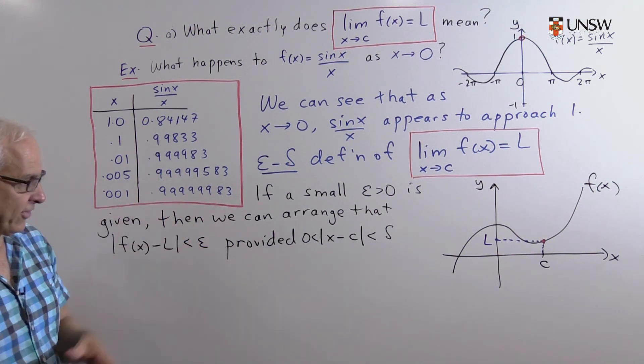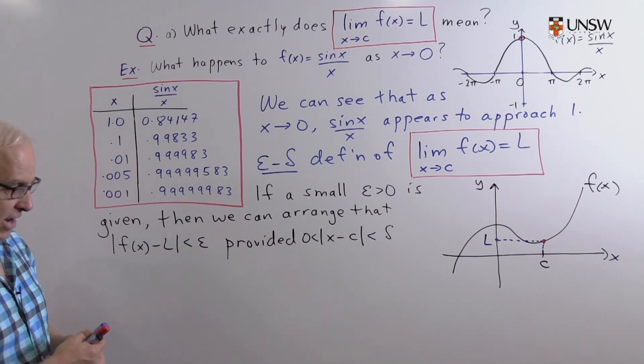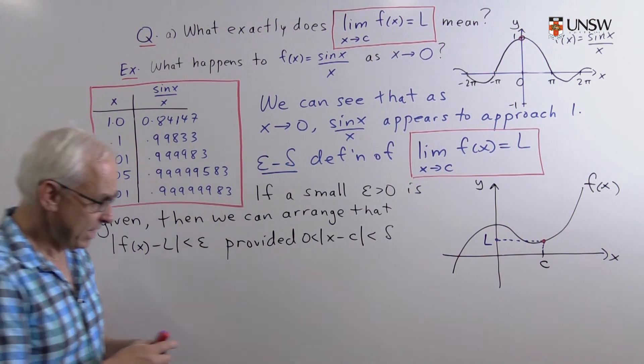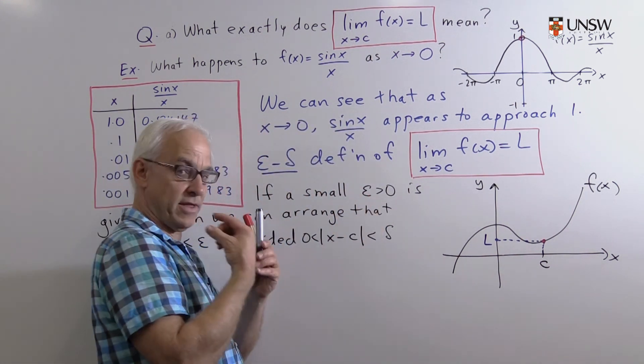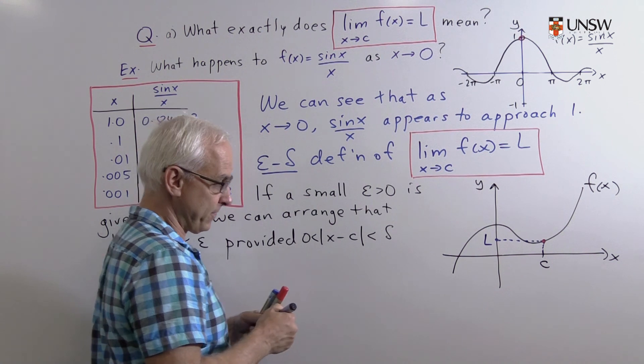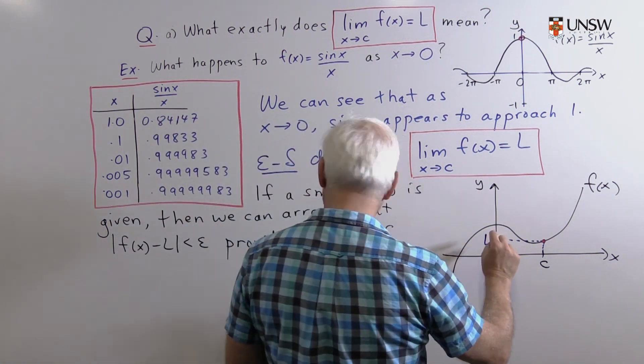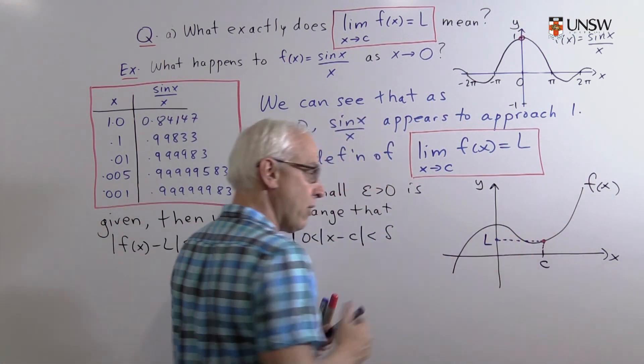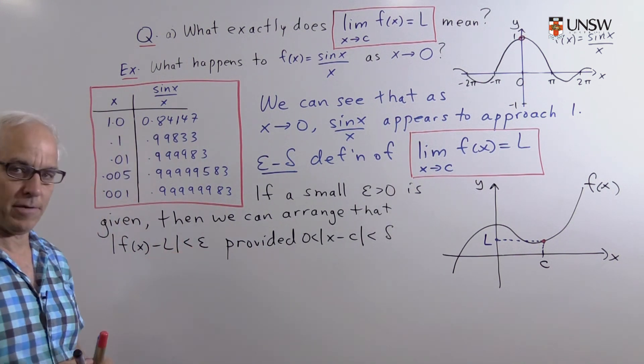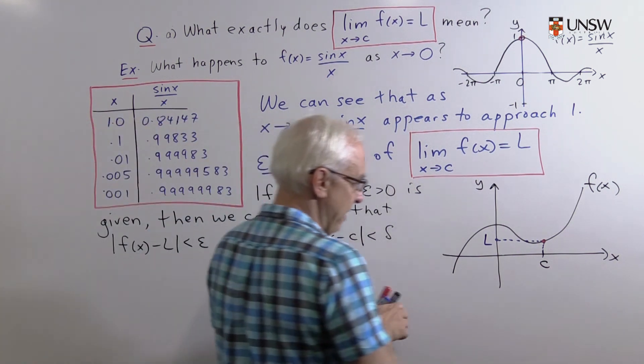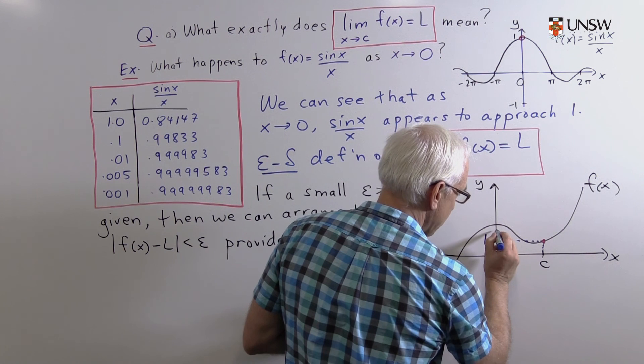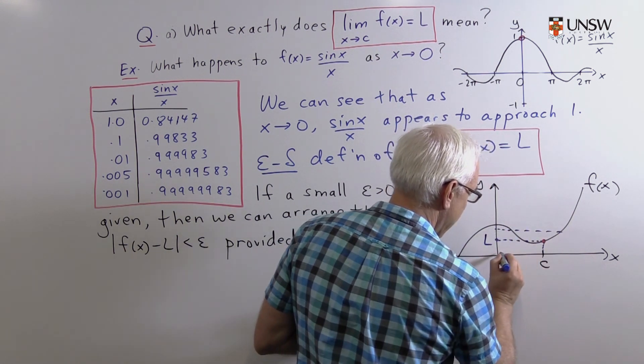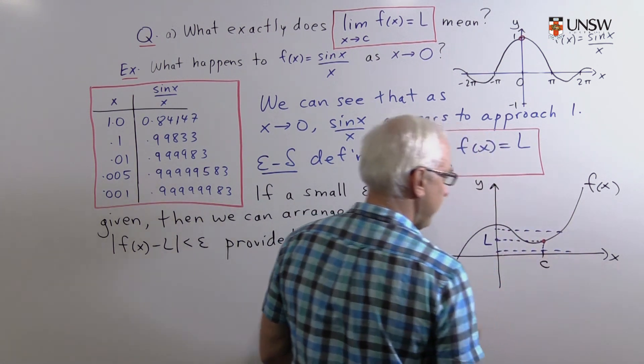Let's have a look at what this is saying. In the diagram what it means is that if we choose an epsilon greater than zero, a small number, and we're interested in the value of the function being within epsilon of L, well that suggests a band around L of width epsilon. Here's a width epsilon, a band.